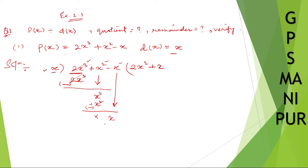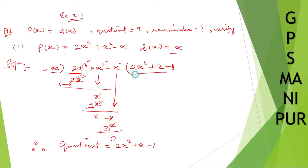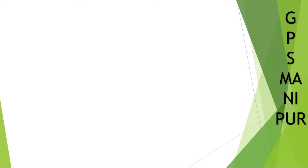What remains is minus x. What do you multiply x to get minus x? Minus one — x into minus 1 gives minus x. Change the sign: minus becomes plus, and they cancel. The remainder is zero. So the quotient is 2x² + x − 1, and the remainder is zero.